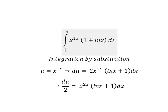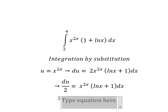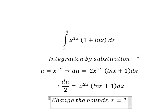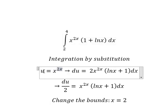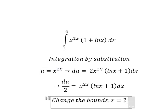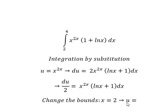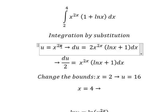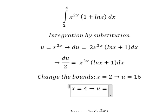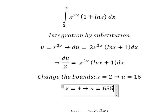Now we need to change the bounds. When x equals to number 2, I will put number 2 in here to find the value of U — so U equals to number 16. When x equals to number 4, we put number 4 in here, and U equals to 65,536.